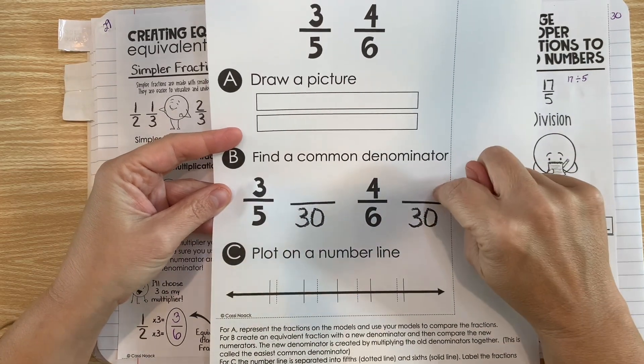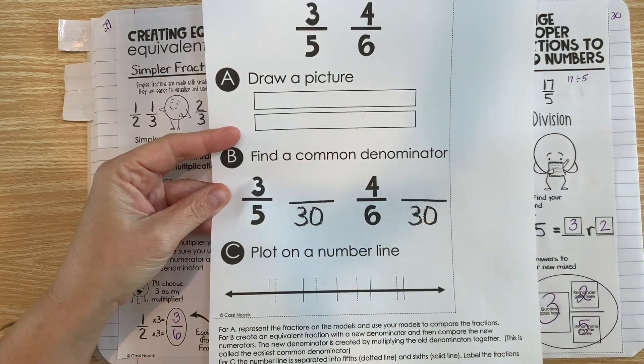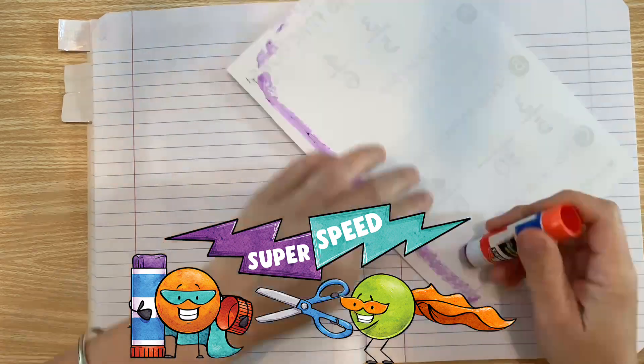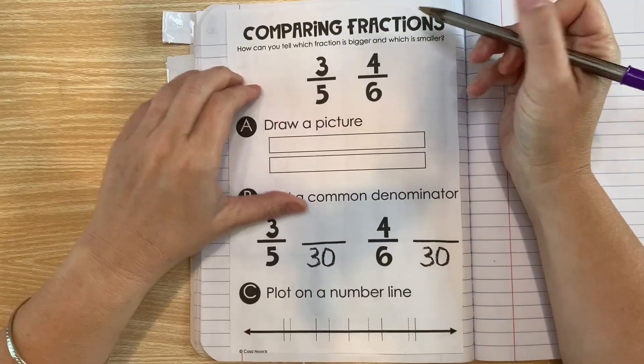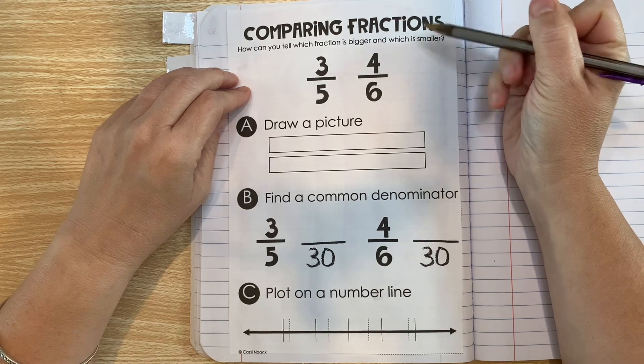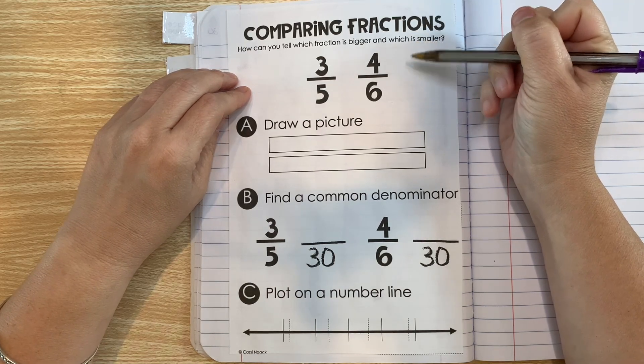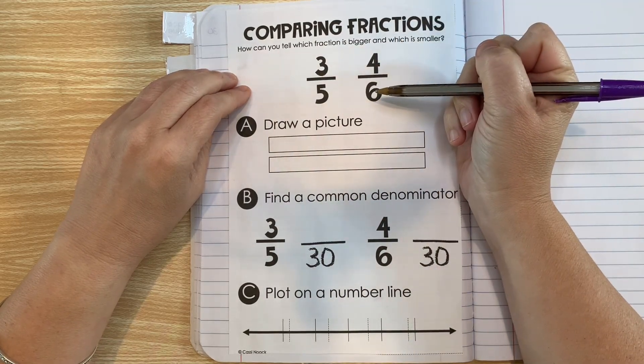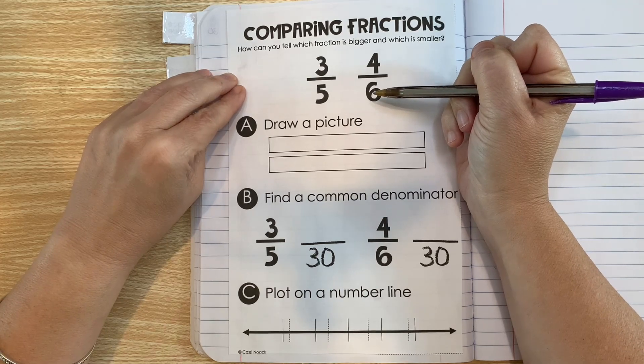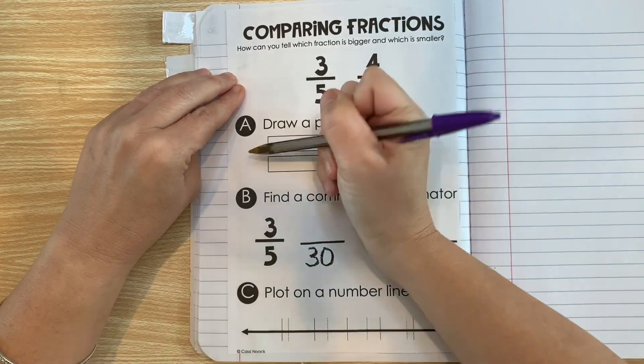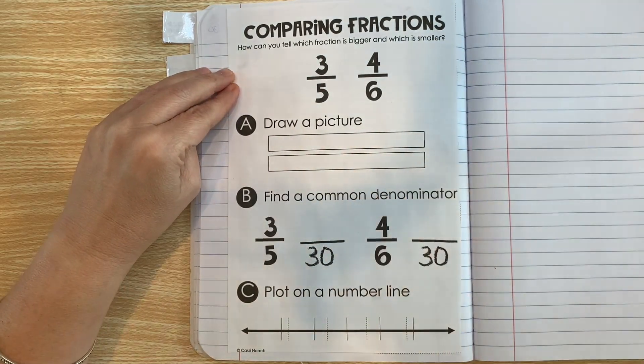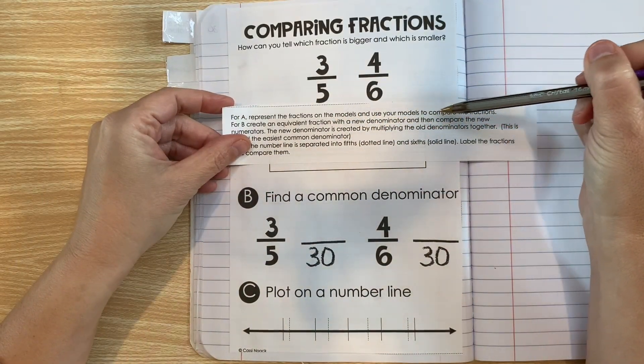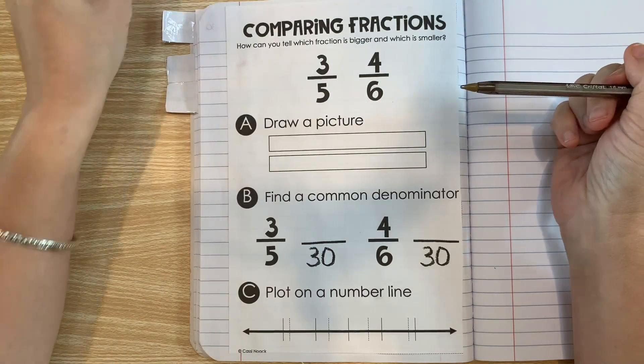Okay, today we are going to practice comparing fractions, so go ahead and cut it out and glue it in. Comparing fractions: how can you tell which fraction is bigger and which is smaller? We've already learned that fractions that look different can actually be equivalent, but they're not always equivalent. Sometimes one's bigger and sometimes one's smaller. Here are three strategies that will help you.